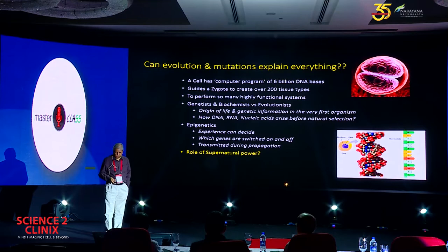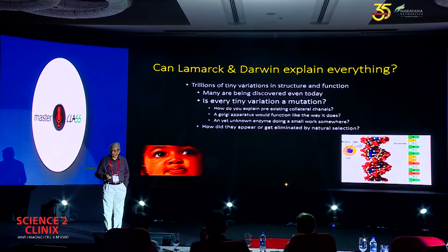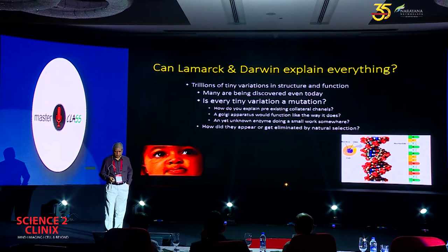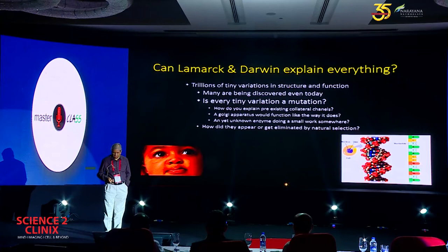Can Lamarck and Darwin explain everything? Again, they cannot, because there are so many variations in life and in the gene itself. For example, there are collateral channels — like a collateral channel in the retina which gets opened up when there's a block. How did mutation decide to have collateral channels? If you have seen blood vessels in the heart during surgery, when one blood vessel is closed, other invisible blood vessels open up. How did that happen? Can mutation explain that? No.